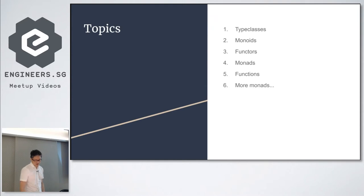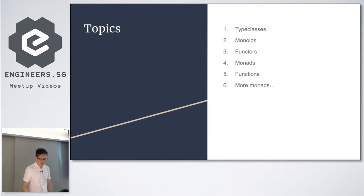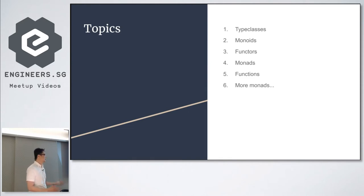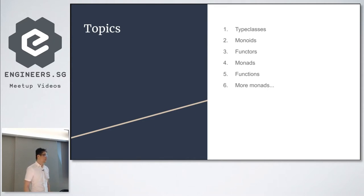So the topics are pretty straightforward: type classes, monoids, functors, monads, functions, and more monads. Just a rough topic. Actually, the two main topics are type classes and functions. Monads, functors — all these are derivations from type classes.